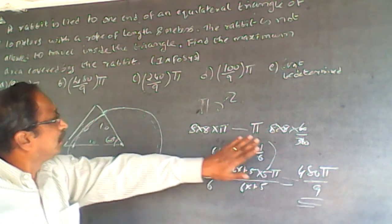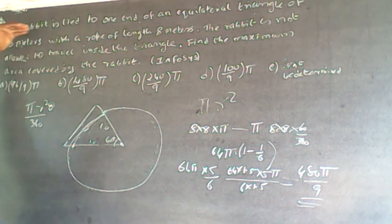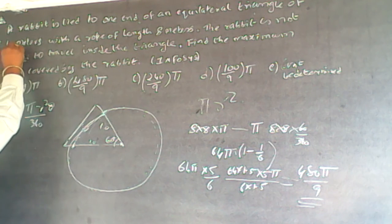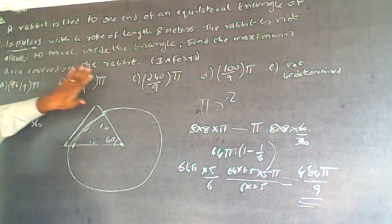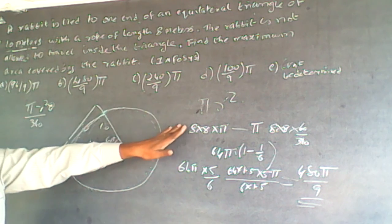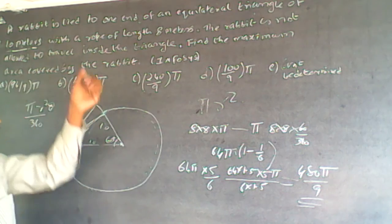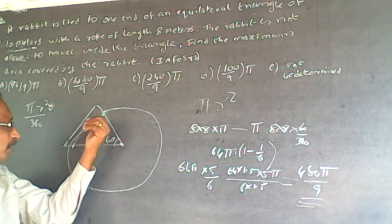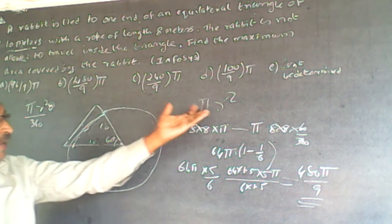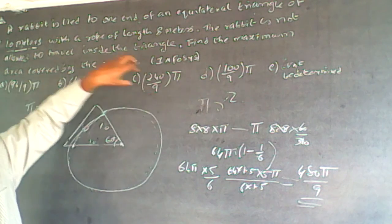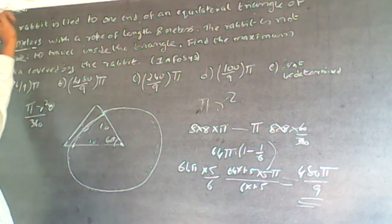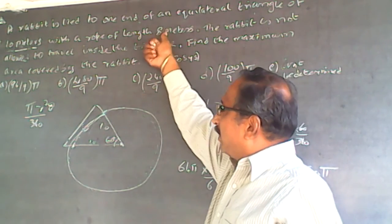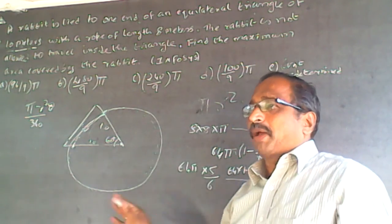One more caution: in the original online question, the triangle side was given as 5 meters, not 10. If the side is 5 meters and the rope is 8 meters, the rope is longer than the side, so the approach changes. In that case the answer would be π r² minus the area of the triangle — that is, 64π minus the area of the triangle — since the rabbit can wrap around.